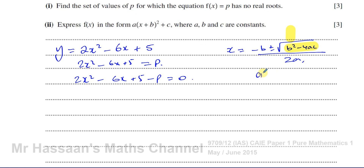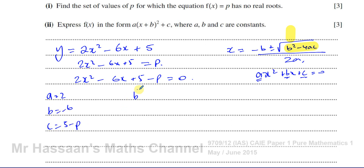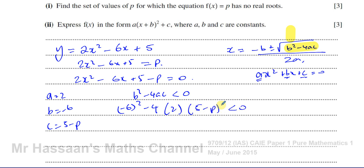For the quadratic ax² + bx + c = 0: a is the coefficient of x², b is the coefficient of x, and c is the constant. In our equation 2x² − 6x + (5 − p) = 0, we have a = 2, b = −6, and c = 5 − p. We need b² − 4ac < 0 for no real roots, so we solve this inequality.